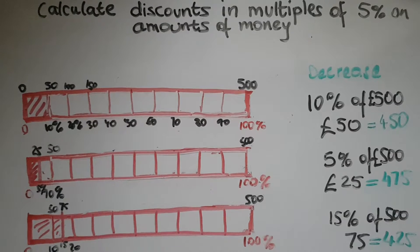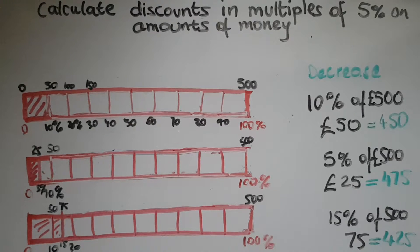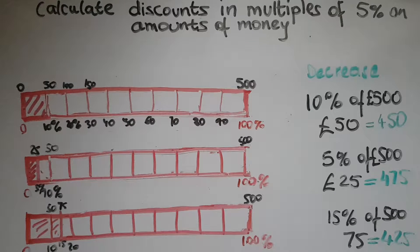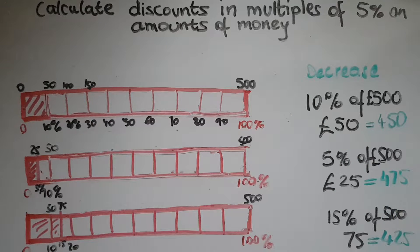In this video we learn to calculate discounts in multiples of five on amounts of money. Discounts are applied when you purchase different items which are on sale, and this links to decrease, which we've looked at in another video on increase and decrease. If you need to refresh your memory, go back to that video.